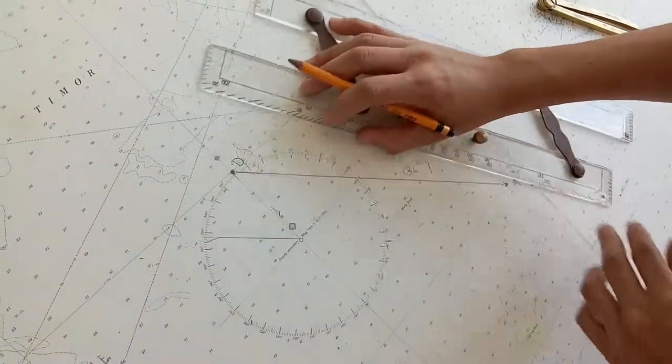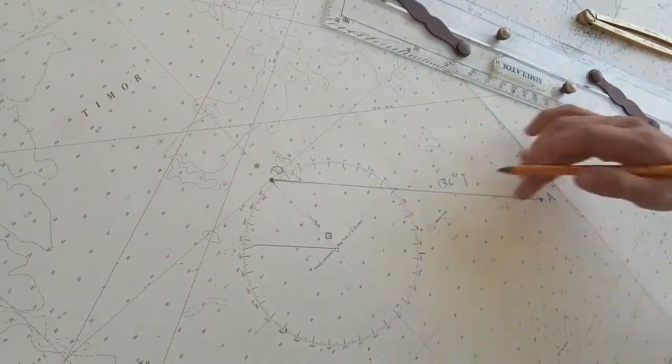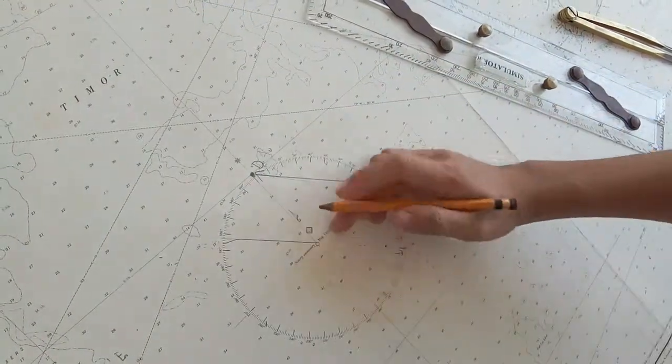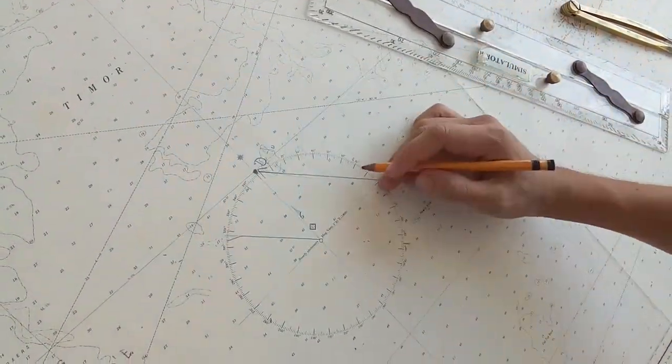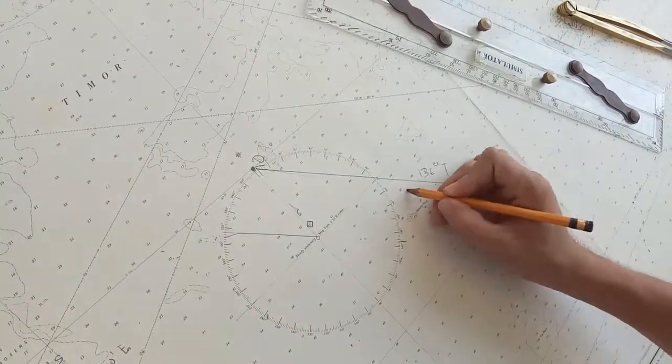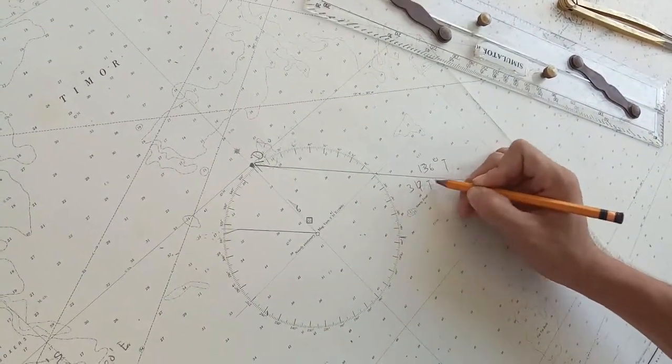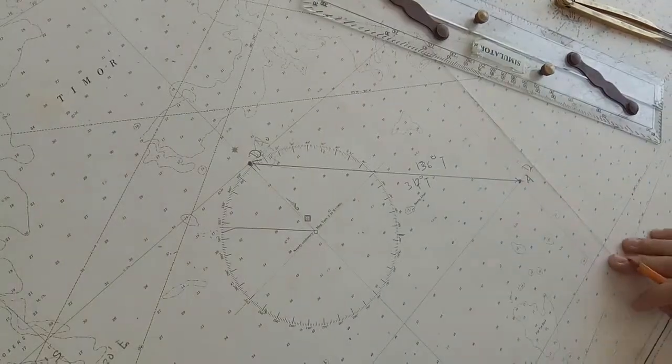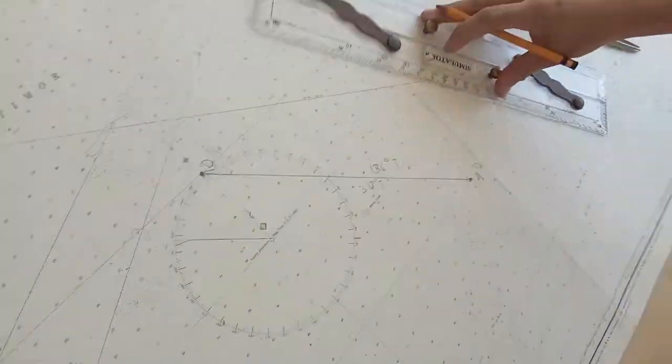So if we're going to here from there, our course is 317 degrees true. So that is how to get your course. That's all. Thank you.